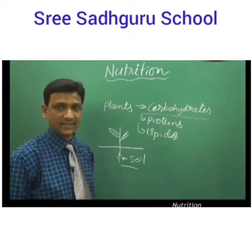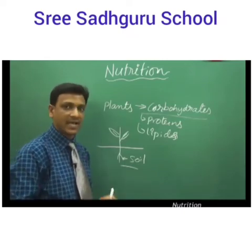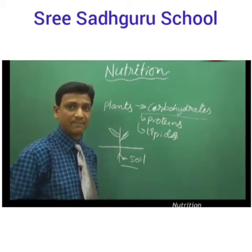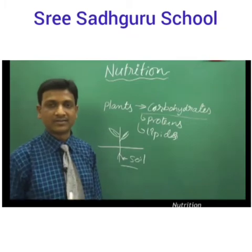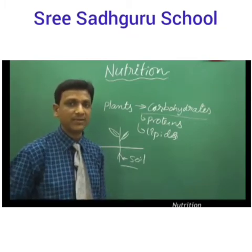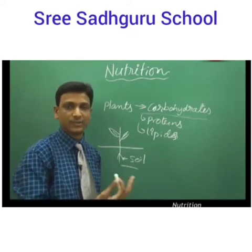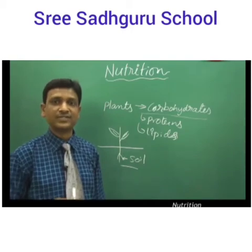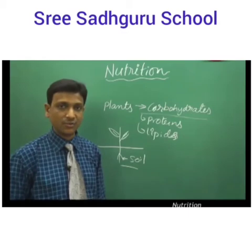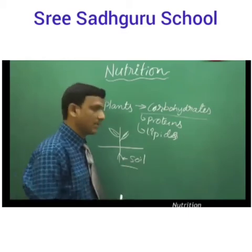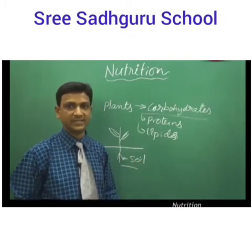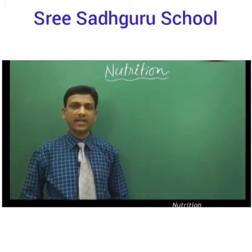It was proven by the experiments conducted by Van Helmont that plants need something else besides soil. By his time, it was not known that plants require carbon dioxide, sunlight, and other things — people believed that soil was the only source of materials for plants to grow and produce food. But Van Helmont disproved this; his experiments showed that along with soil, other materials are used by plants to prepare food.